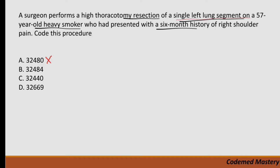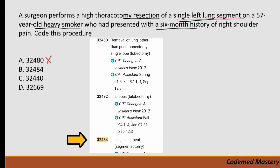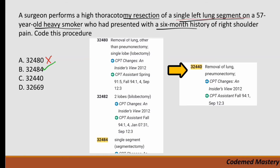Option B is 32484 — removal of lung, single segment, segmentectomy. The question states resection of a single left lung segment, so it is segmentectomy. Our answer is option B, 32484. Option C is 32440 — removal of lung, pneumonectomy — which is for removal of an entire lung. In our case they performed segmentectomy, not pneumonectomy, so we eliminate option C.